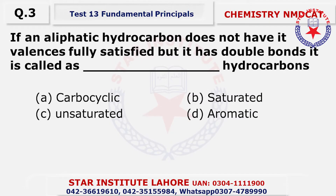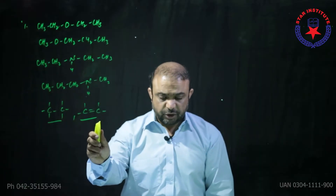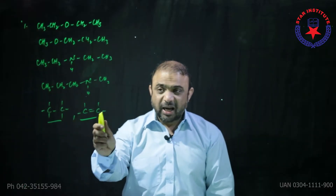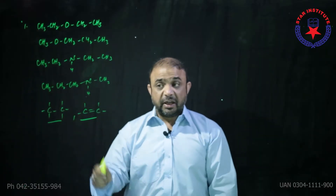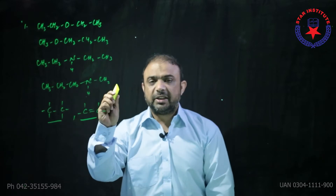Question number three: If an aliphatic hydrocarbon does not have its valency fully satisfied — it has a double bond — so it is not fully satisfied, then it should be unsaturated. Valency is satisfied but not fully satisfied.